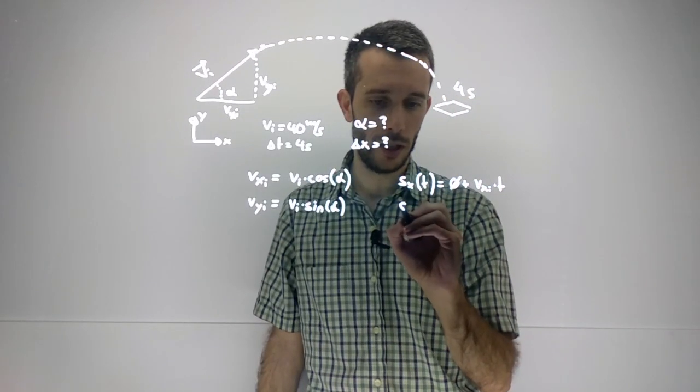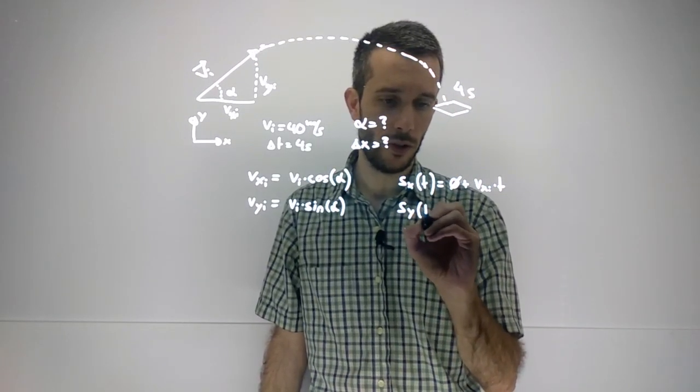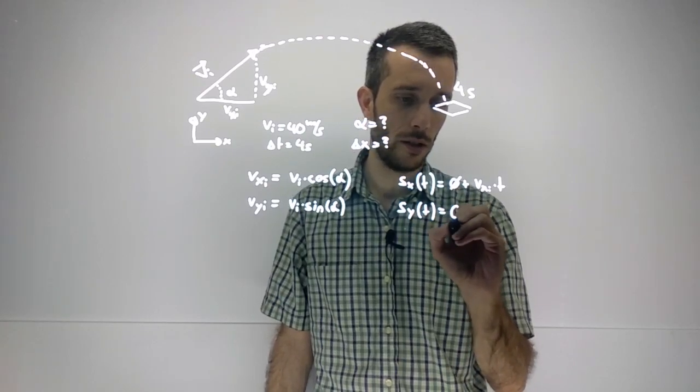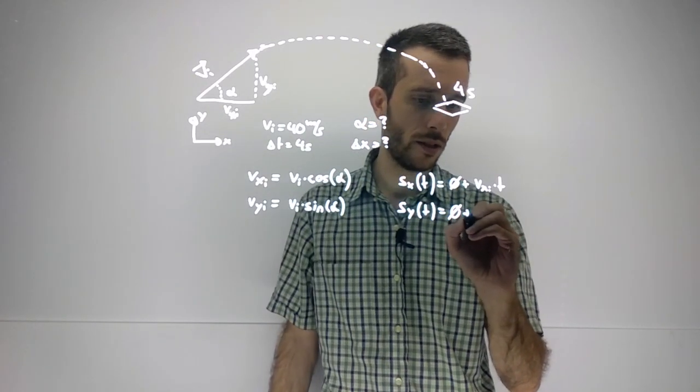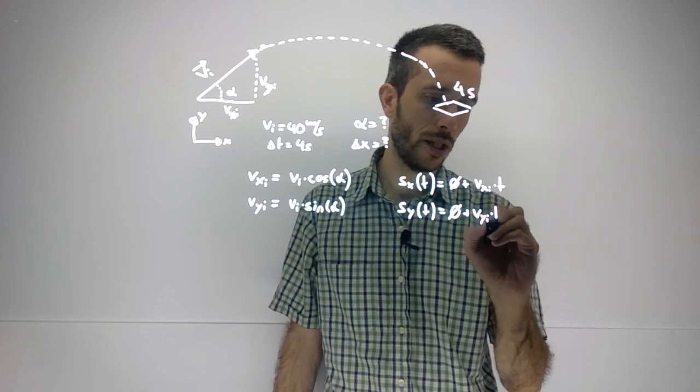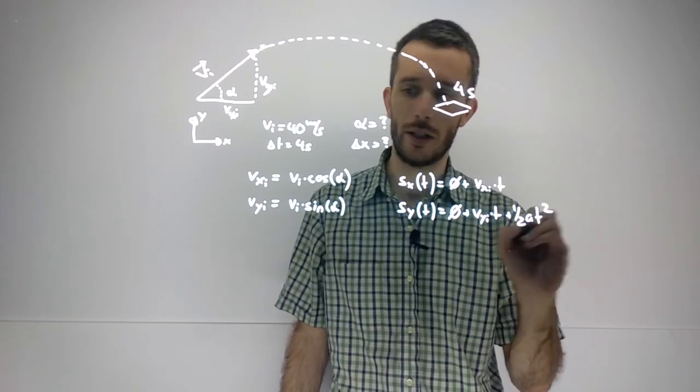And then we have sᵧ as a function of time is 0, I'm starting at a height 0, plus vᵧ initial times time plus one half acceleration times t squared.